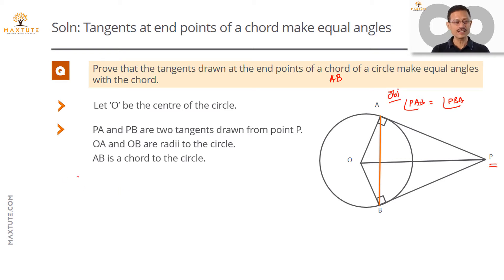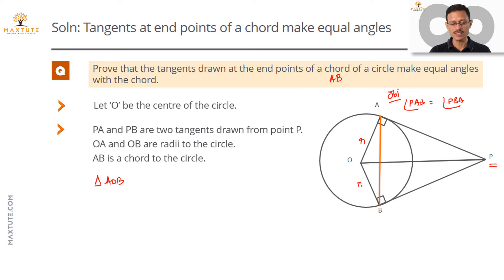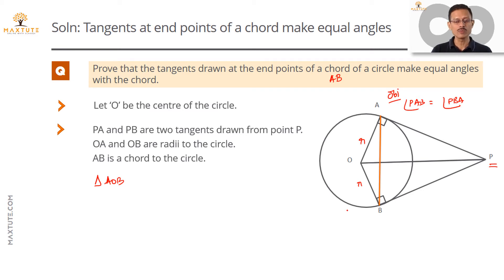Let's look at triangle AOB. Two of its sides, OA and OB, are radii of the circle, which means these two sides are equal in length. Therefore triangle AOB is an isosceles triangle, and correspondingly its two base angles — angles OAB and OBA — must be equal.